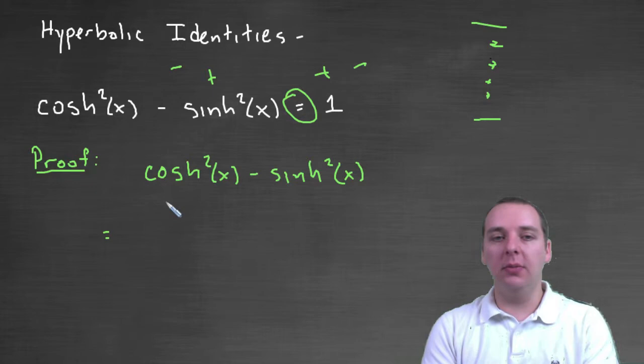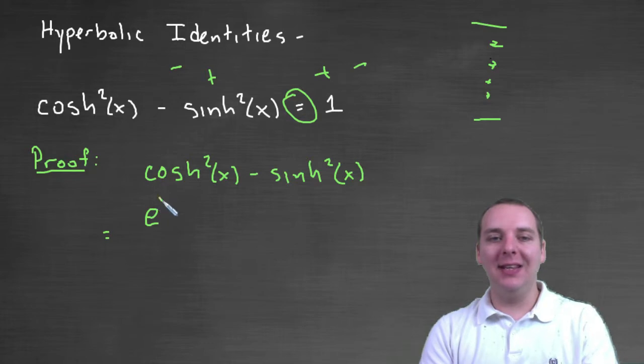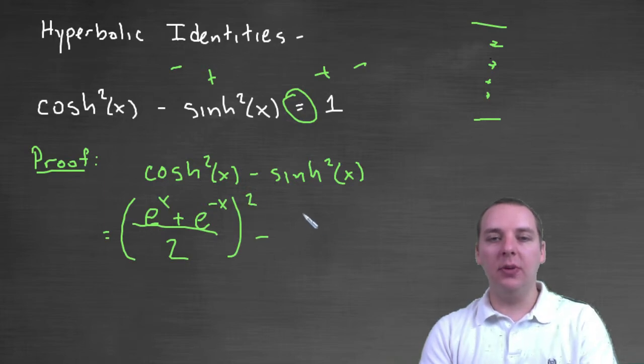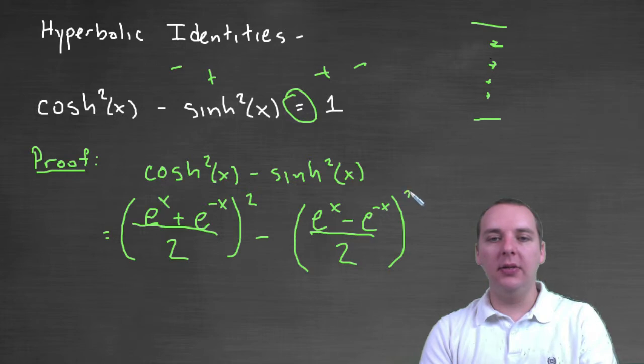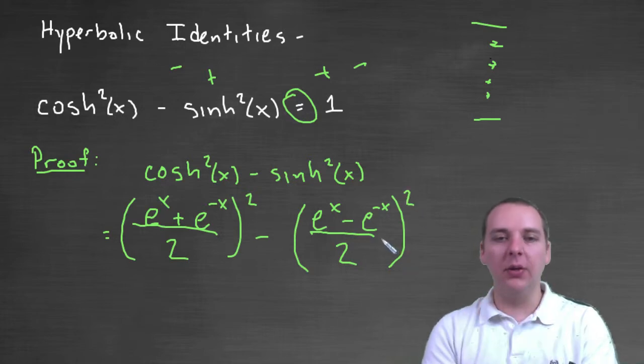Well here's one thing that's pretty clear we could do. Let's write it in terms of their basic definitions. This is e to the x plus e to the negative x all over two quantity squared, and hyperbolic sine would be e to the x minus e to the negative x all over two quantity squared. So that's the first thing we could do.